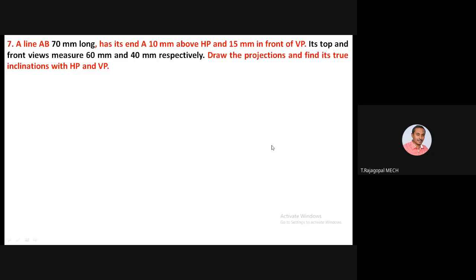Hi friends, today we will discuss two more problems related to projections of straight lines inclined to both the planes. A line AB 70 mm long has its end A 10 mm above HP and 15 mm in front of VP. Its top and front views measure 60 mm and 40 mm respectively. Draw the projections and find its true inclinations with HP and VP.